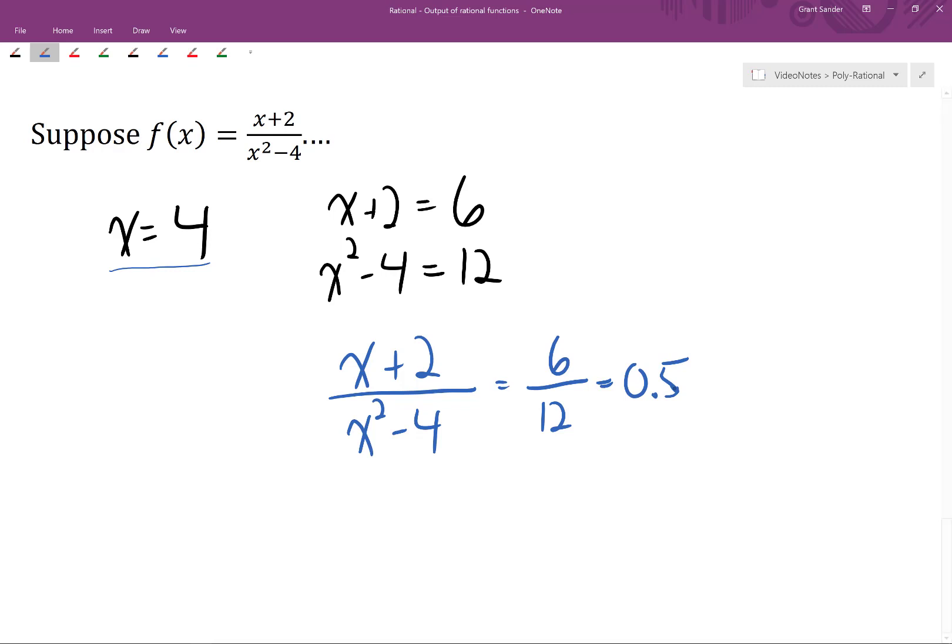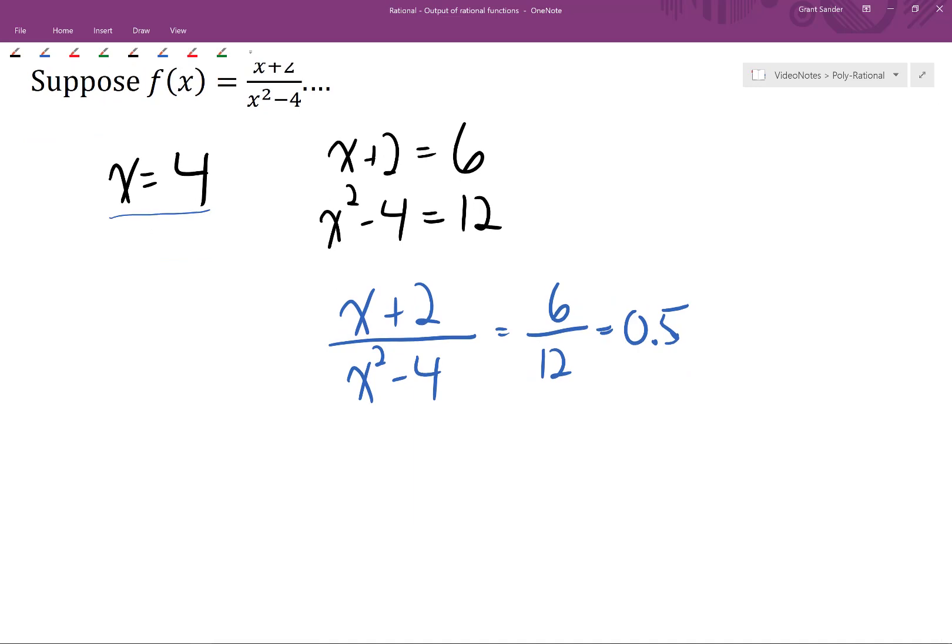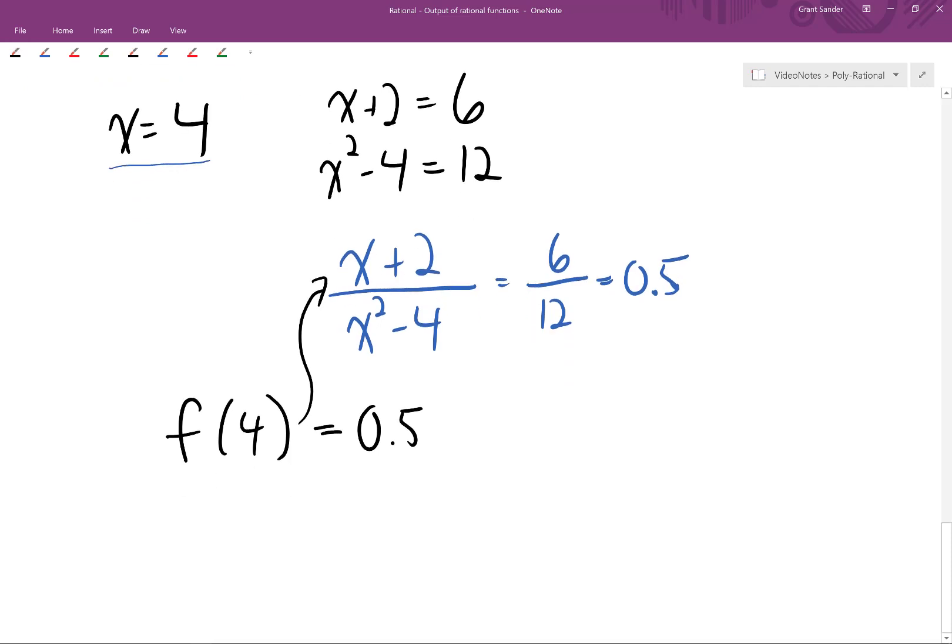Now the output of this rational function represents that relative size. Or more specifically, f of 4 is really just this value right here, and so f of 4 is equal to 0.5. If we plug 4 in for x in our function rule, we get an output of 0.5, and this tells us that the numerator, x plus 2, is 0.5 times as large as the denominator when x equals 4.